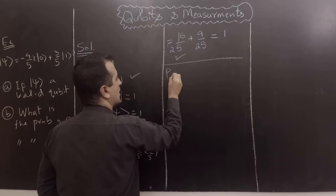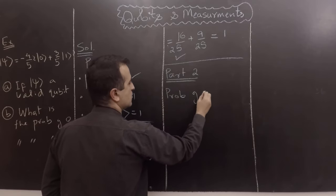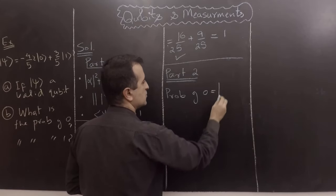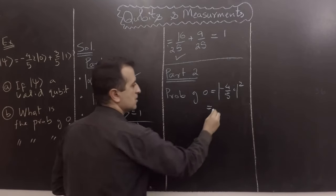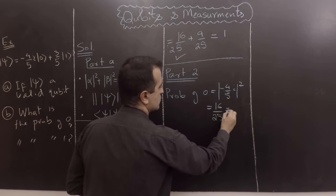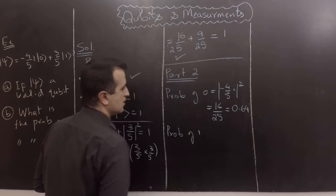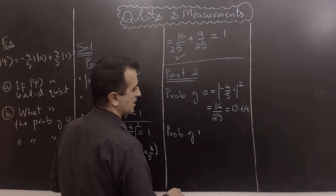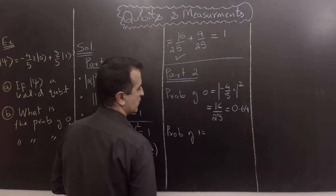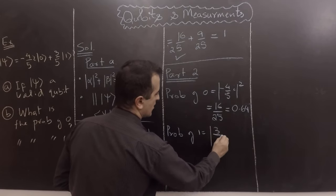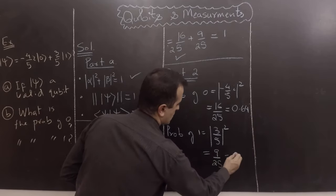For part 2, the probability of 0 equals |alpha|², which is |−4/5 i|² equals 16/25, which equals 0.64. For part 3, the probability of 1 can be found by subtracting 0.64 from 1, or by computing |beta|² which is (3/5)² equals 9/25, which equals 0.36.